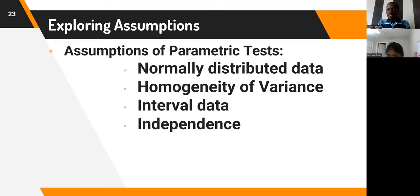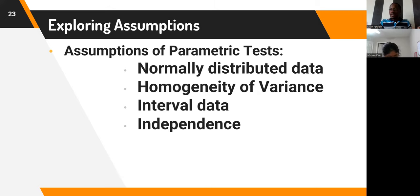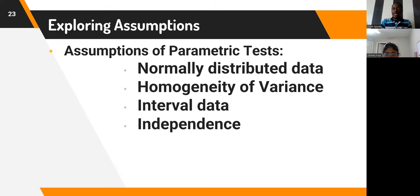There are four assumptions underlying parametric tests. The first is that the data is normally distributed. The second is that the variance in the data — how spread the scores are — should be homogeneous across all levels: homogeneity of variance. The third assumption is that you must be working with interval data. If you are working with categorical variables, that is a different thing.